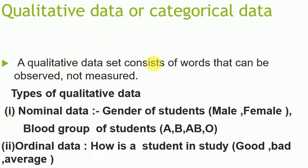Qualitative data is a set of words that can be observed but not measured. Types of qualitative data include nominal data like gender of students (male, female) or blood group of students (A group, B group), and ordinal data like how is a student in a study (good, bad, average).